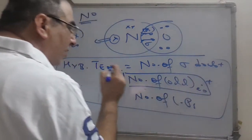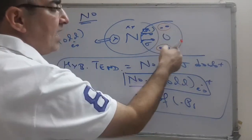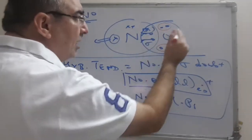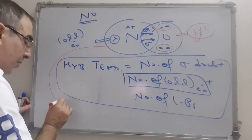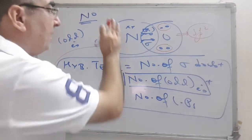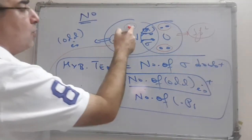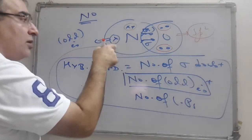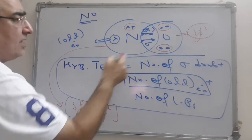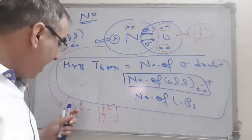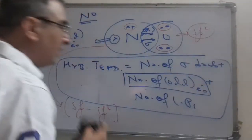We are going to consider the odd electron here also. For oxygen: two lone pairs, one sigma bond, no odd electron — hybrid number is three, so oxygen has sp2 hybridization. For nitrogen, since the odd electron may or may not come in hybridization: one lone pair plus one sigma bond equals two, and adding the odd electron gives three. So its hybridization ranges from sp2 to sp2, meaning the tendency lies between these two states.